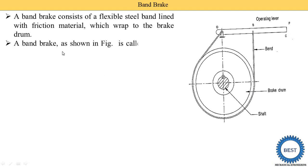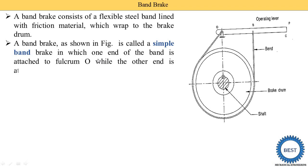A band brake as shown in the figure is called a simple band brake. There are two types of band brake: one is called simple band brake and the second one is called differential band brake. First we will understand the simple band brake.